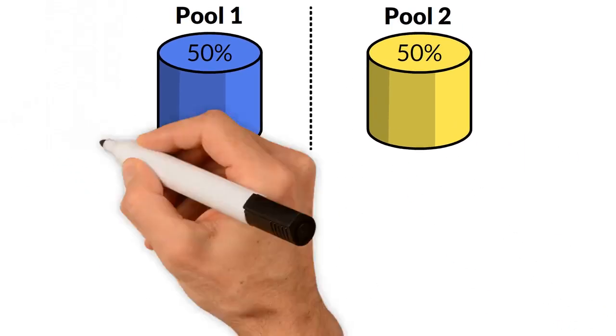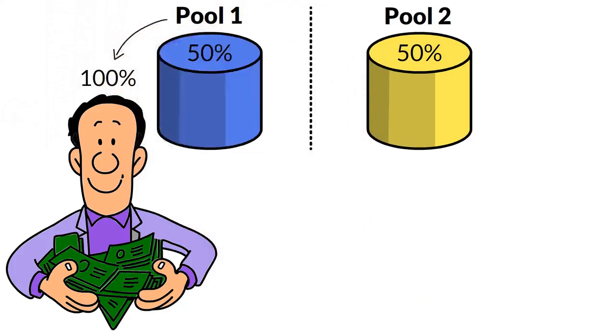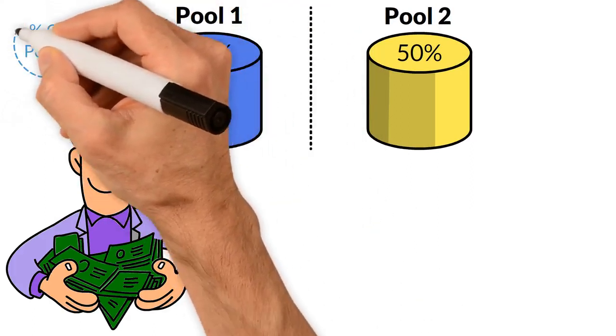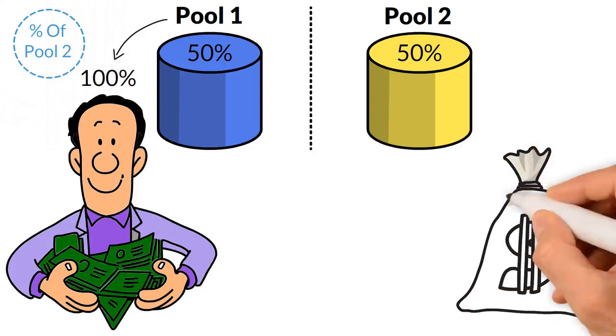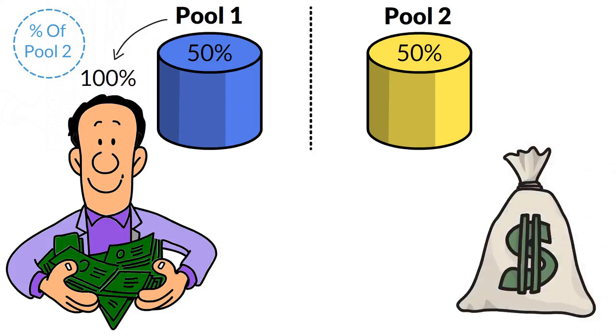You receive 100% of Pool 1 plus a percentage of Pool 2 based on your own one-time contribution qualification. The contribution options are as follows.